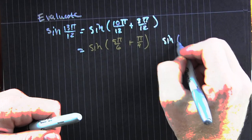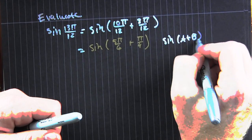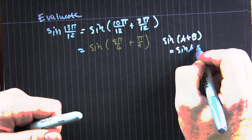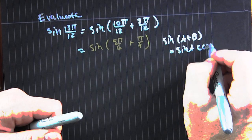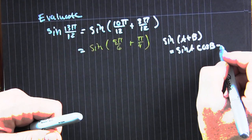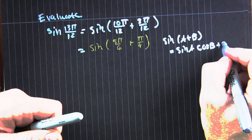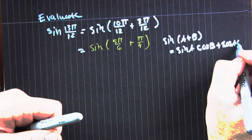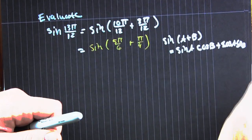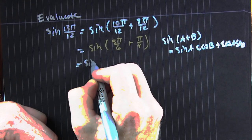We're going to expand that out using the sum of sine angles. That's sine a cosine b — plus — cosine a sine b.